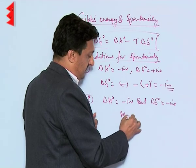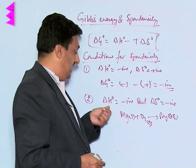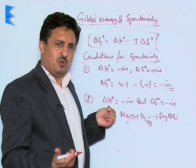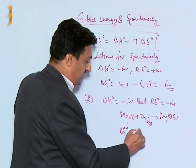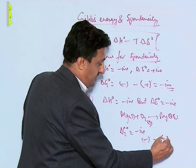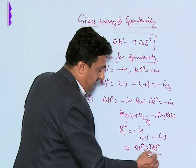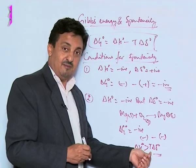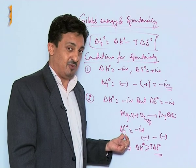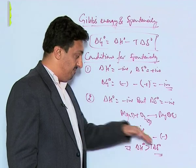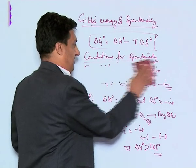The second condition is when delta H is negative but delta S is also negative. An example is magnesium solid combusting in oxygen gas to give magnesium oxide solid — entropy is decreasing but enthalpy is negative. Delta G will be negative only if the magnitude of delta H is greater than T times delta S. Such processes are spontaneous only below a certain temperature, and are called enthalpy-driven reactions.